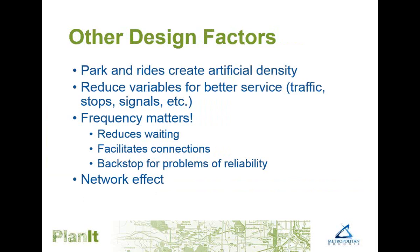Park and rides play an important role in the transit system, particularly for downtown commuters. These serve market areas that lack the density for regular route service and, in effect, create artificial density by having riders come to us. A recent survey showed that reliability was the top consideration for riding transit — reducing variables such as traffic, signal delay, and boarding time can both speed up service and provide more consistent travel times. Frequency also matters: the greater the frequency, the higher the ridership, and higher ridership can then justify even better frequency. Good frequency reduces average waiting time and facilitates better connections.